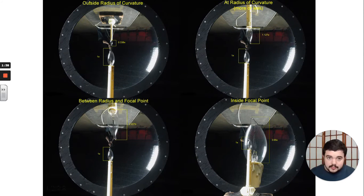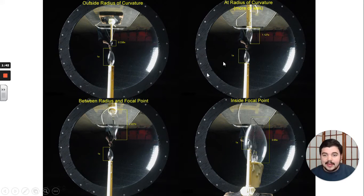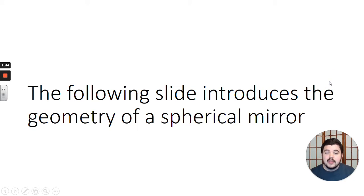More images here, we can see the same thing. Reduced image, magnified image, really magnified image. Some of these are inverted upside down, some of these are right side up. So let's talk about the geometry behind what's happening.